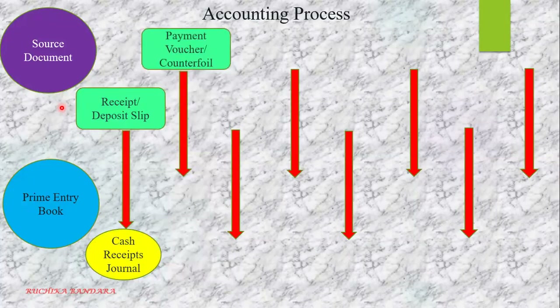Next is the payment voucher or the counterfoil. When you use a checkbook, after tearing that check, the remaining part in your checkbook is called the counterfoil. That is a document showing to whom you have made the payment and for what reason. By using that information, we are making the cash payment journal.